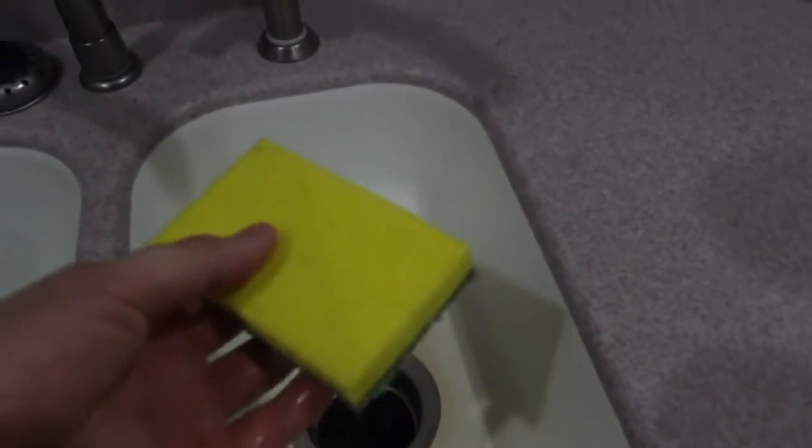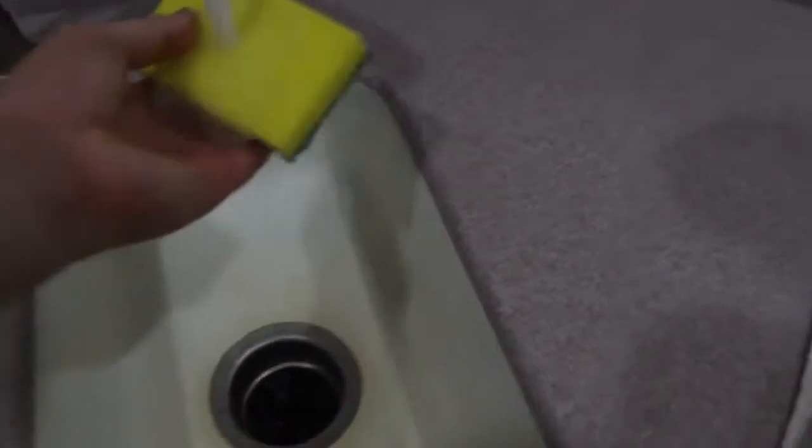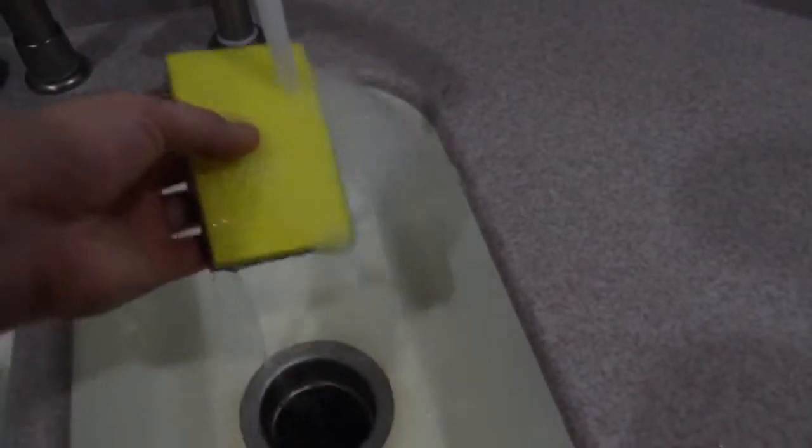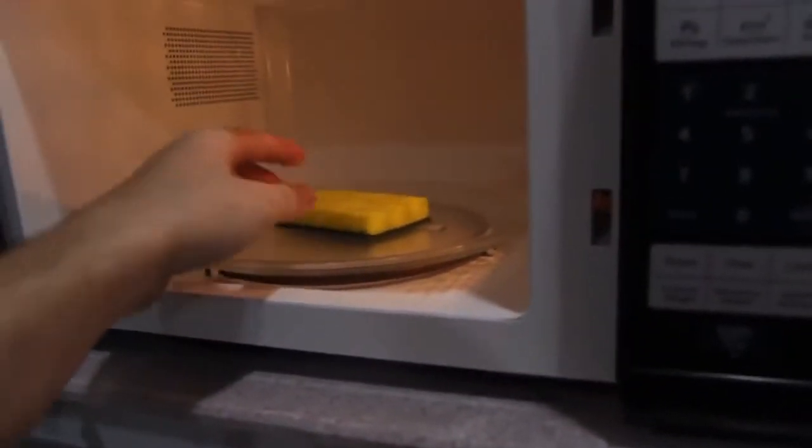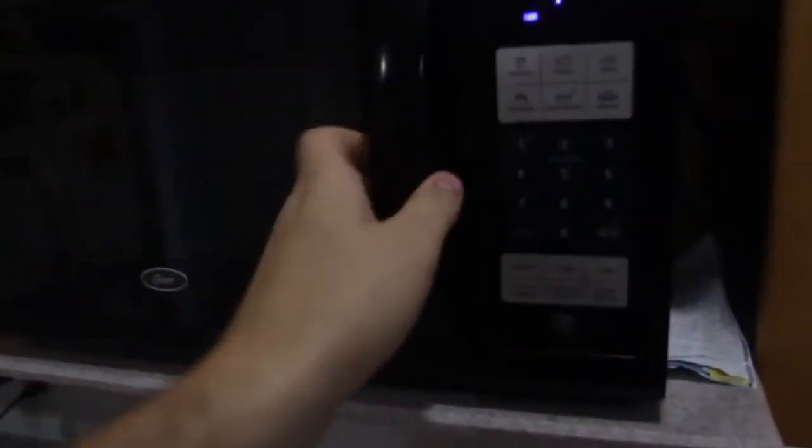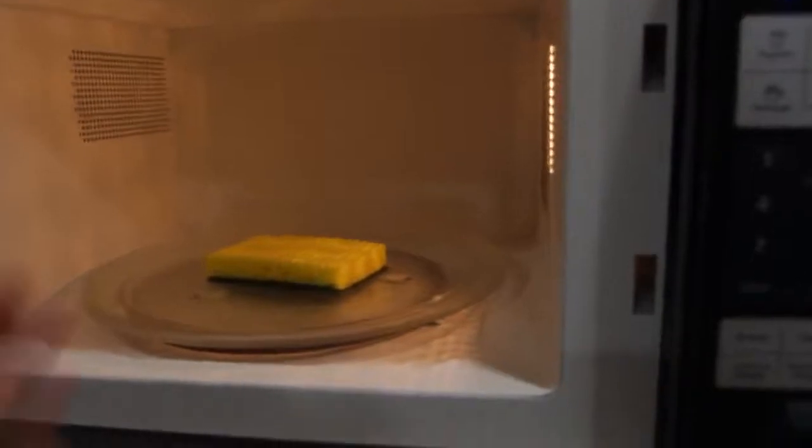Here's how to sanitize your sponge. Make sure it's going to get really wet. Then we're going to throw it in the microwave for two minutes. Let's see if it works. Alright guys, let's see what happens.